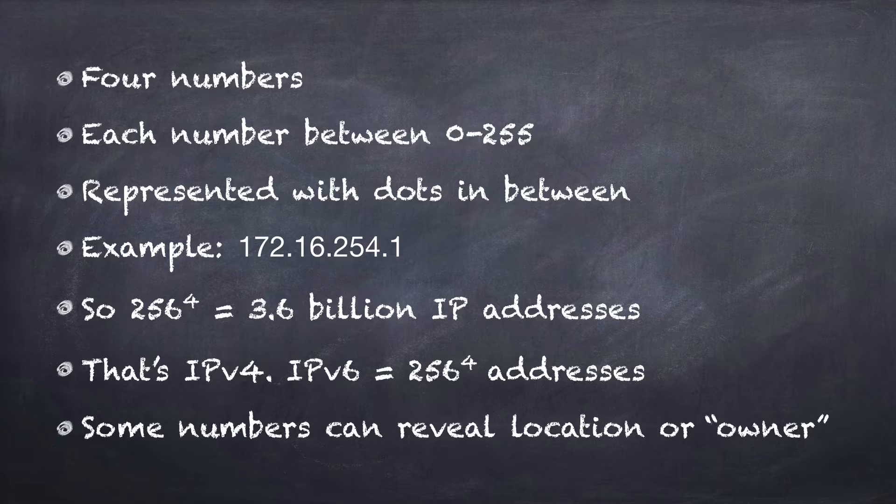Now some of these numbers actually can reveal kind of a location. Like for instance the first number, the first two numbers, may be the country and then maybe a company that has bought a block of IP addresses. Or maybe a telecommunications company or cable company or something like that.